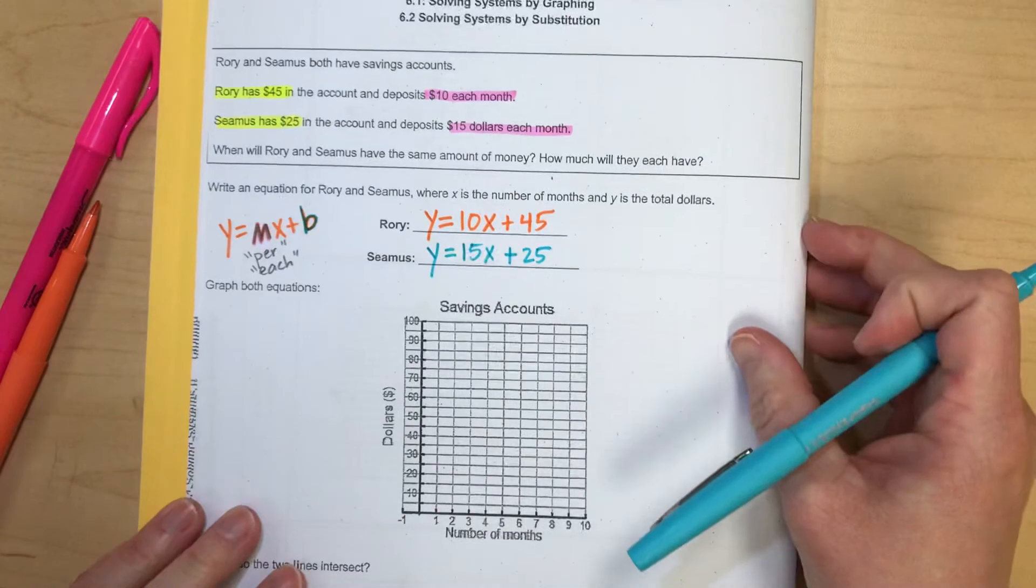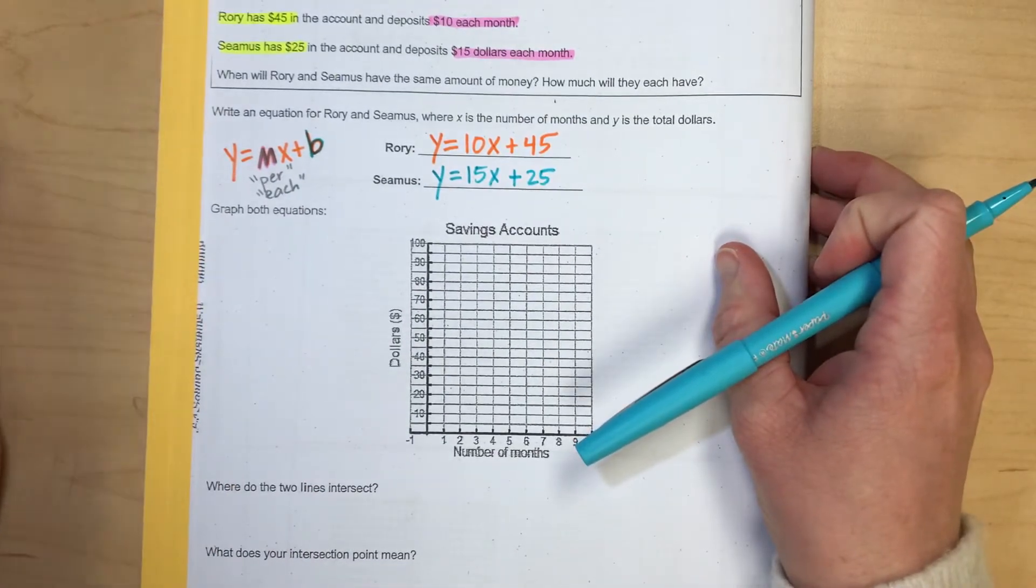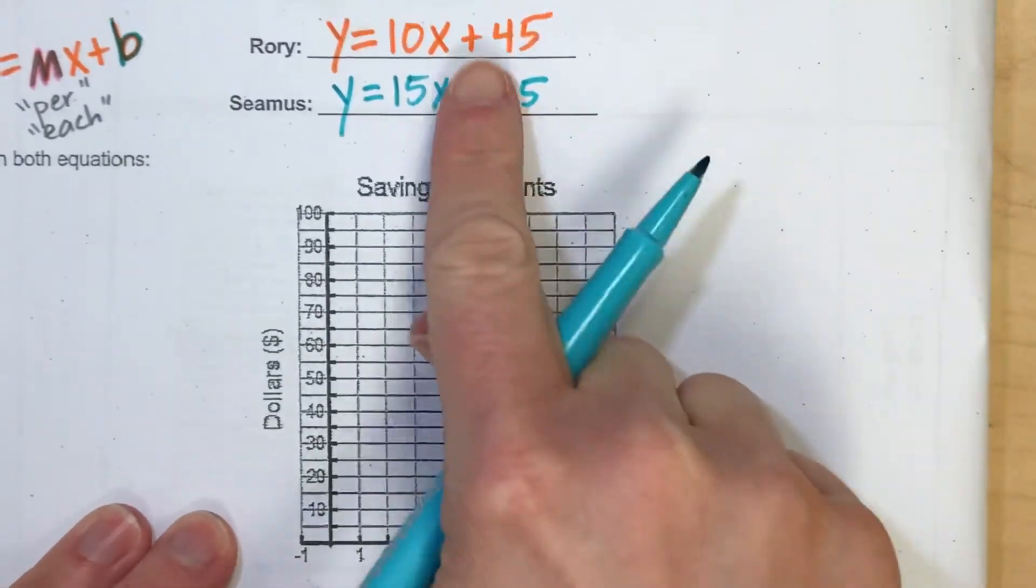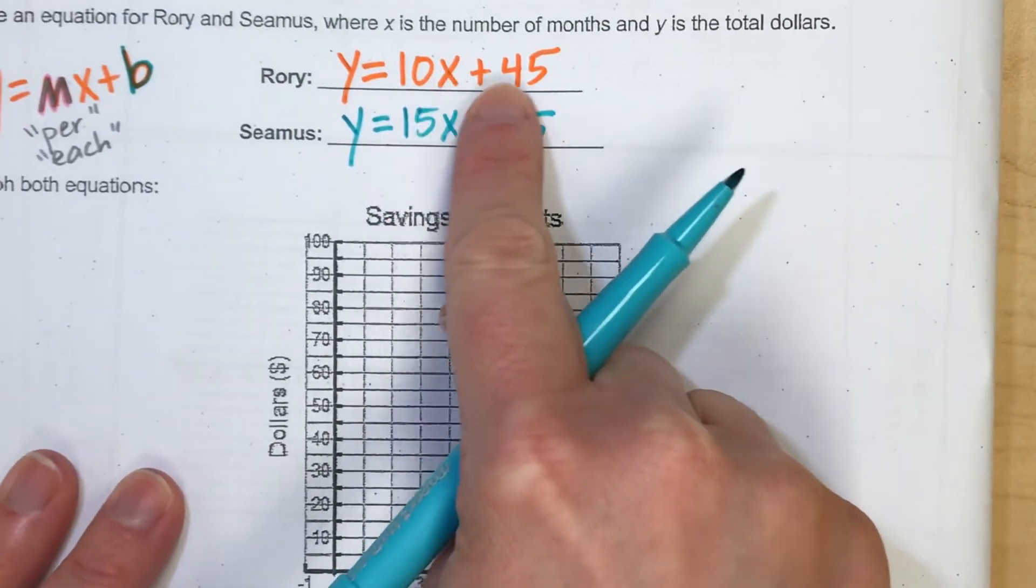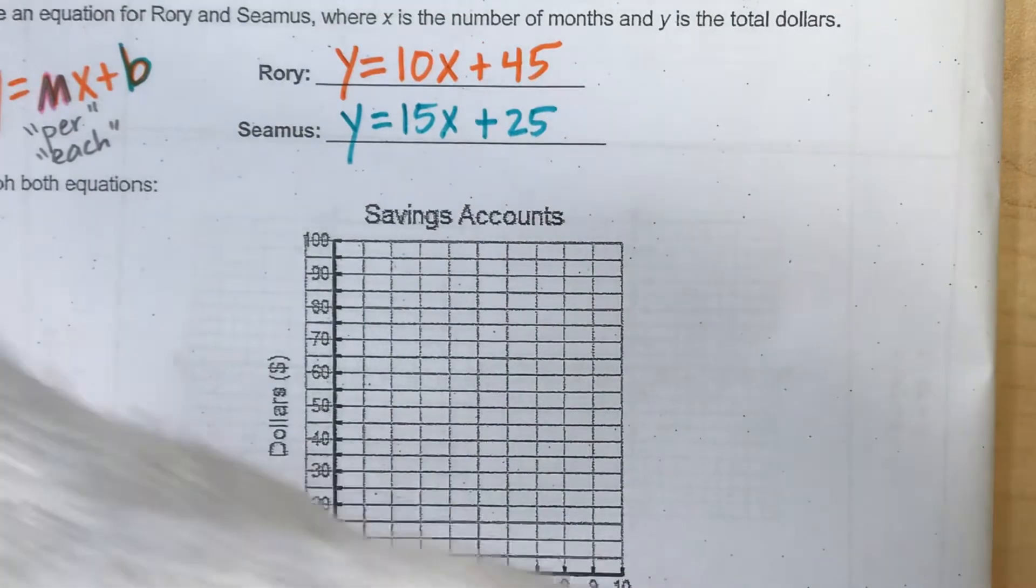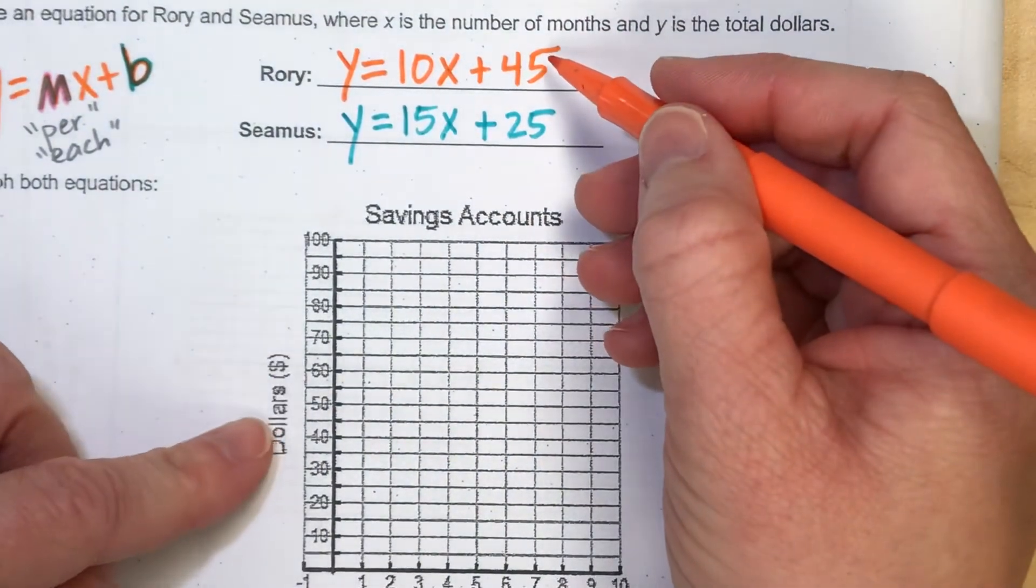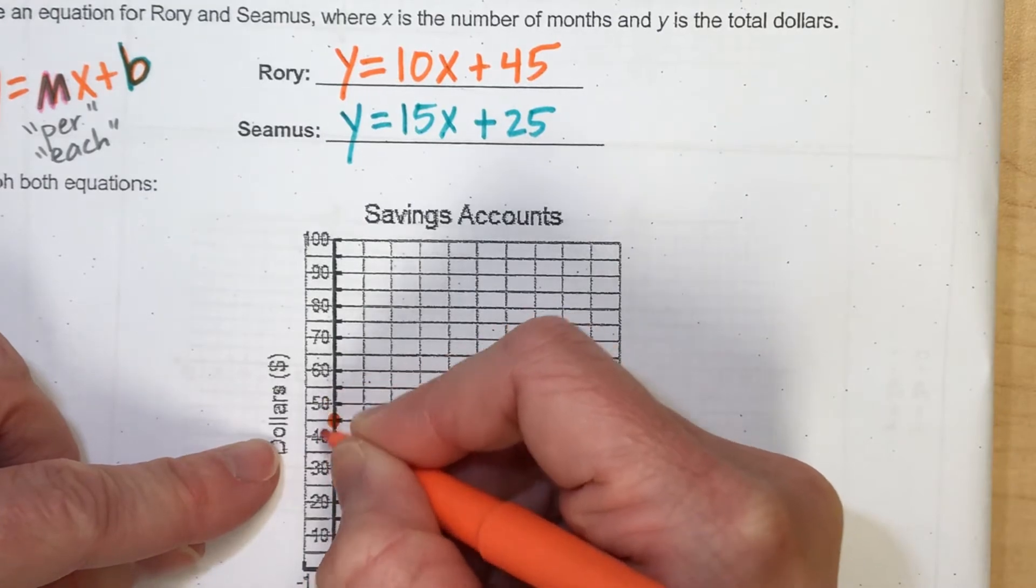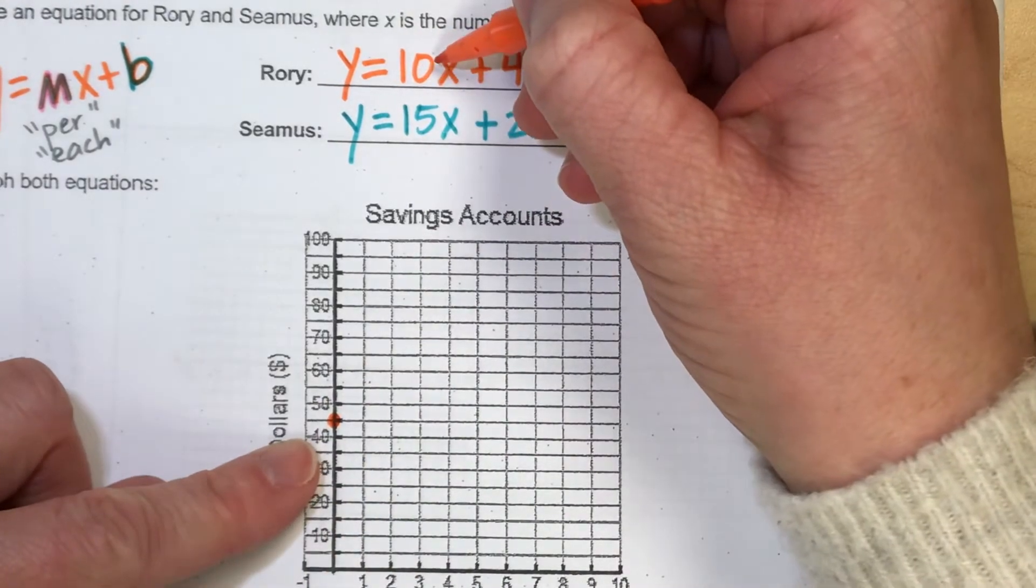Now let's actually graph those two equations here on our grid. So let me zoom in here for the graph. Our first function here is 10X plus 45. I'm going to start at $45 on our Y axis, which would be this point here in between $40 and $50. And now the savings is $10 a month.